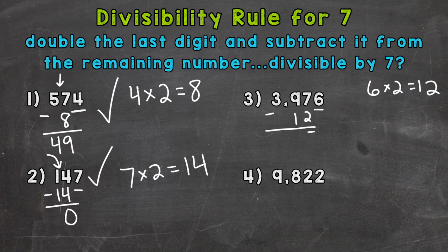So 7 minus 2 is 5. 9 minus 1 is 8. Bring down our 3. 3 minus 0 is 3.